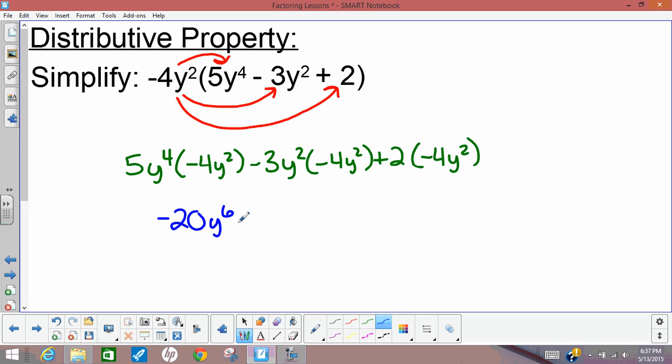Negative 3 times negative 4 gives us positive 12. Y squared times y squared gives us y to the 4th. 2 times negative 4 gives us negative 8, and y squared stays the same because the 2 did not have any y's attached to it. So after distributing, that's what we get. So this monomial times this polynomial gives us a three-term polynomial: negative 20y to the 6th plus 12y to the 4th minus 8y squared.